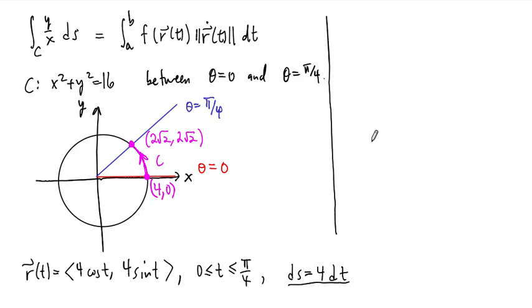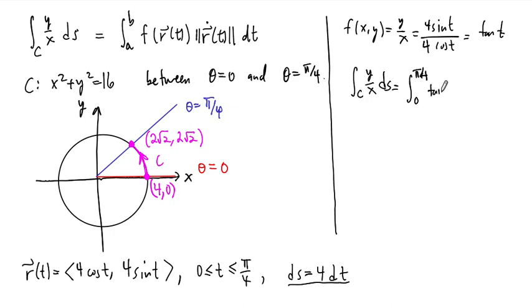At this point now, the other thing we have to do is plug in this parametrization into our function. So our function is f(x, y) equals y over x. But in terms of our parametrization, this is just 4 sin t over 4 cos t, and that's just tan t. And so what we have to integrate for this path integral is the integral from 0 to pi over 4 of tan t times 4 dt.